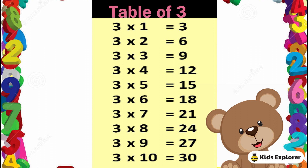Table of 3. 3 1's are 3, 3 2's are 6, 3 3's are 9, 3 4's are 12, 3 5's are 15, 3 6's are 18, 3 7's are 21, 3 8's are 24, 3 9's are 27, 3 10's are 30.